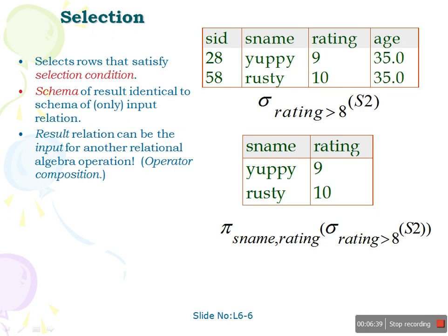Now we will look at filtering both records and columns together — applying both selection and projection. For example, if I want to list sailor names and their ratings for sailors whose rating is greater than 8, I will get two sailors — Yuppy and Rustic. This demonstrates applying both selection as well as projection together.